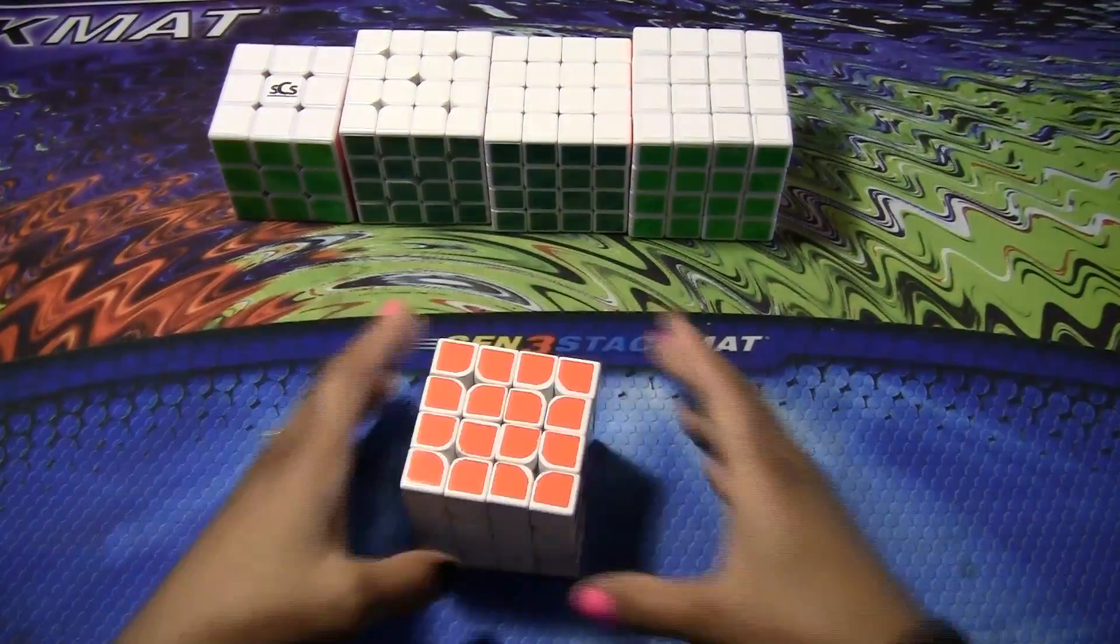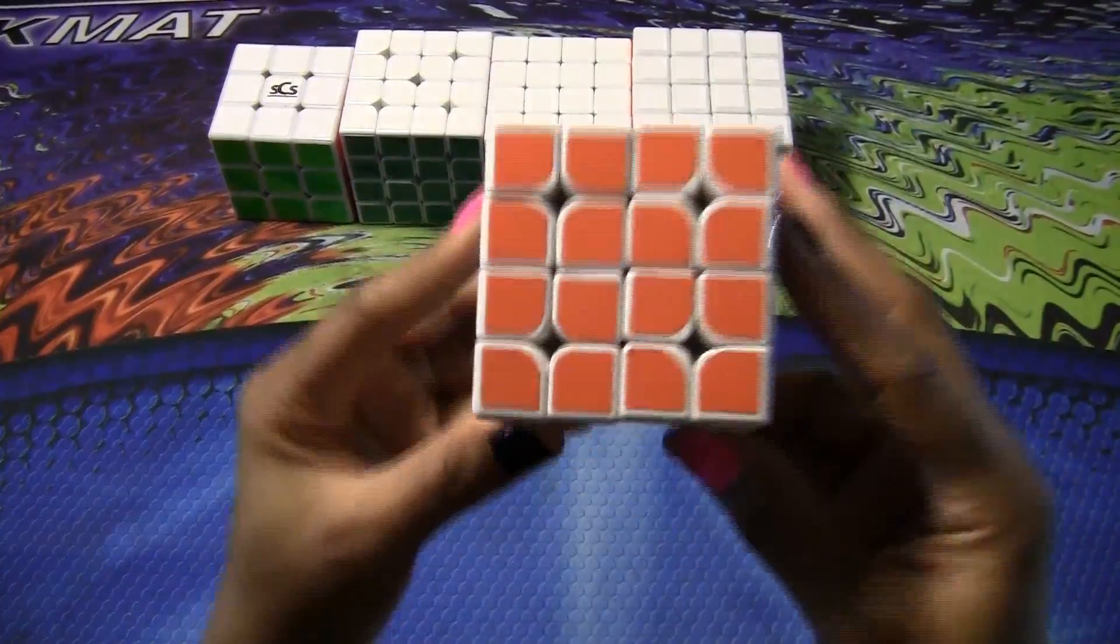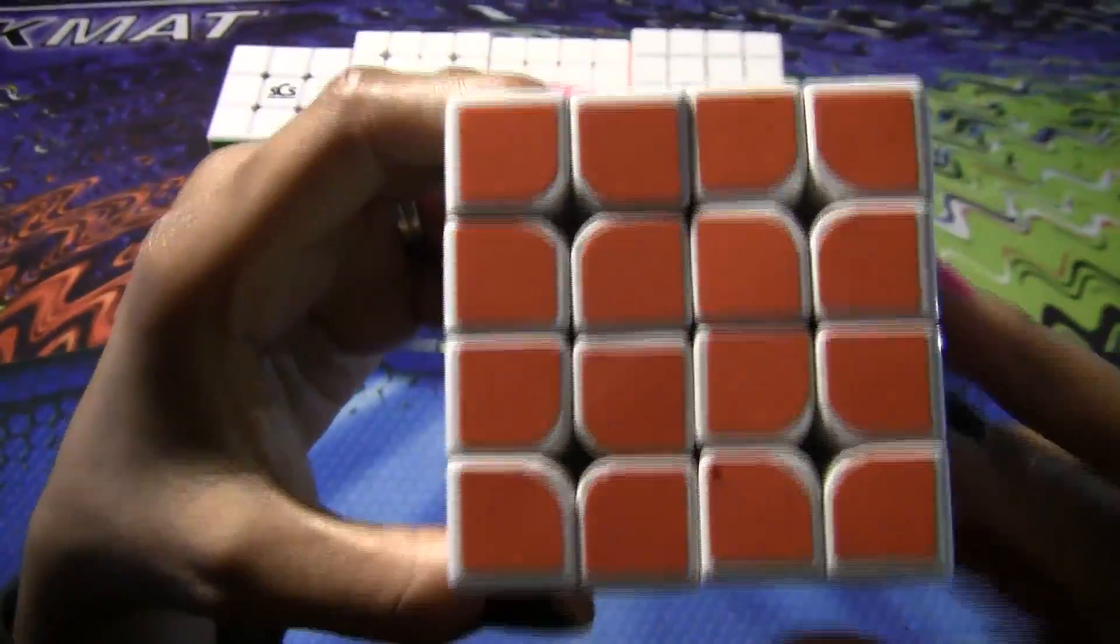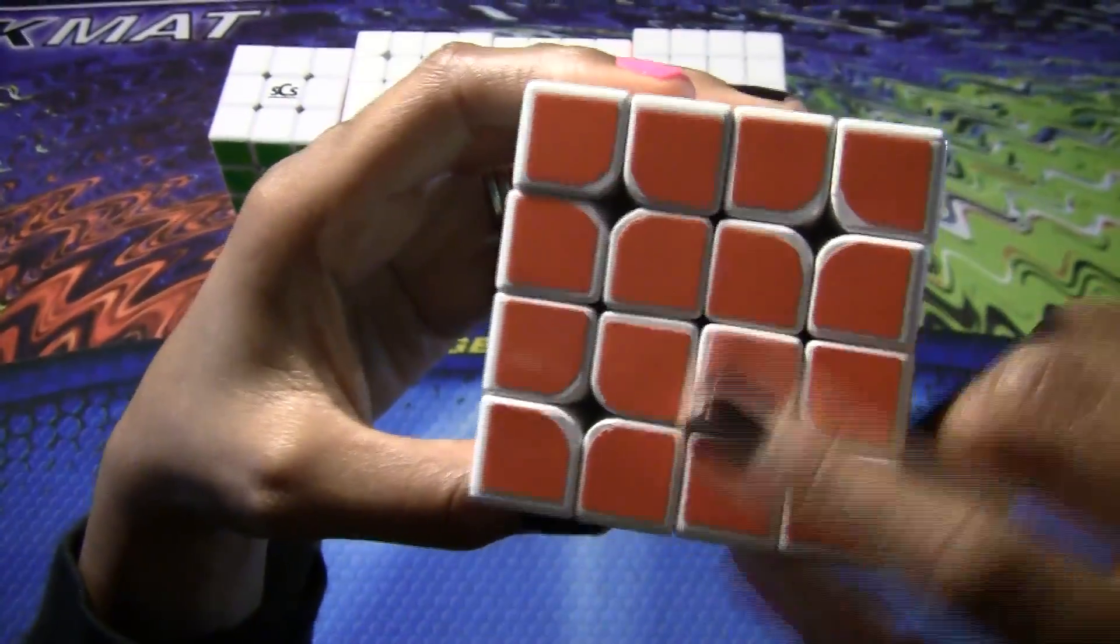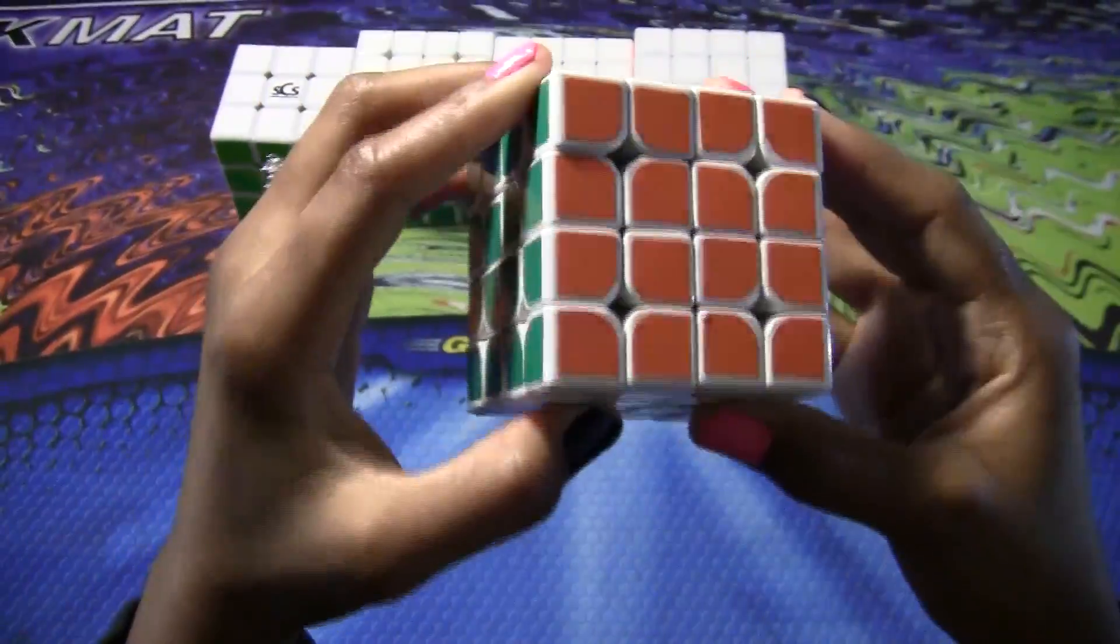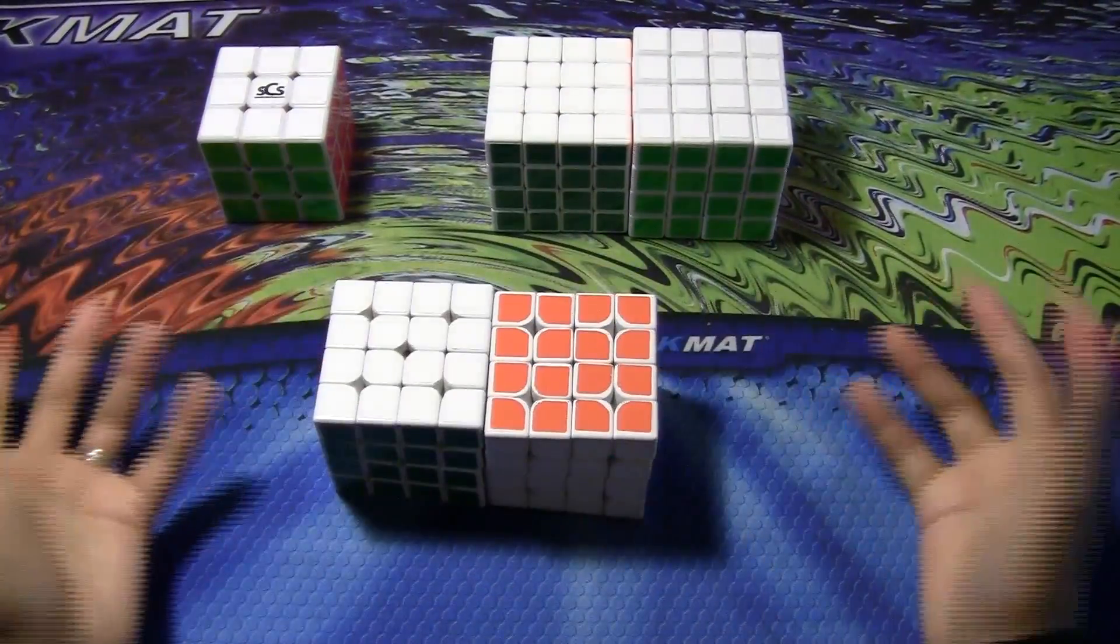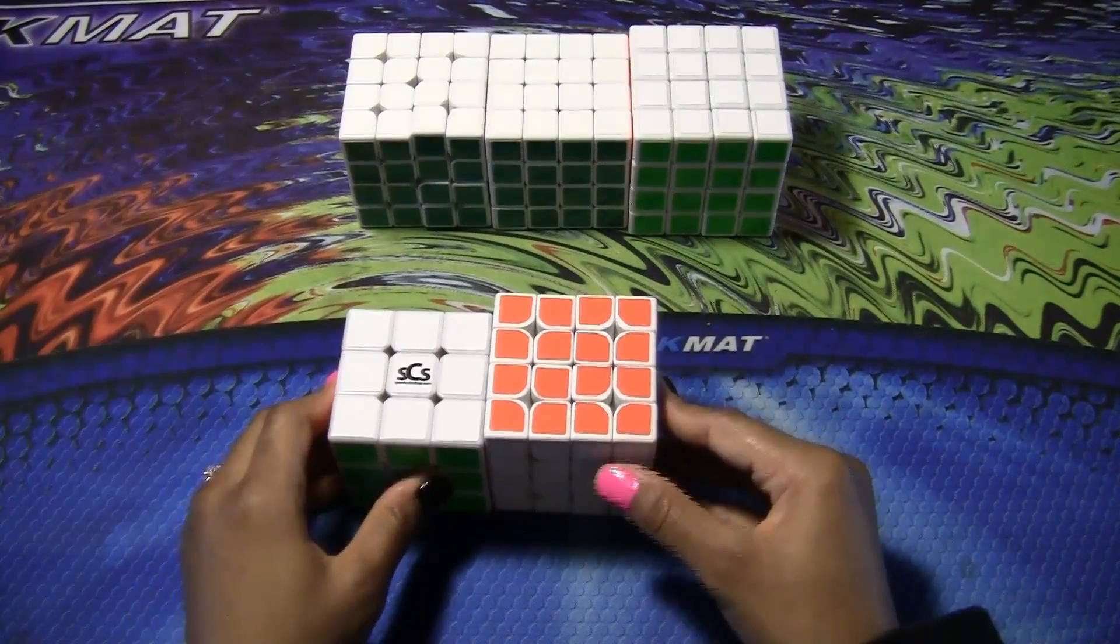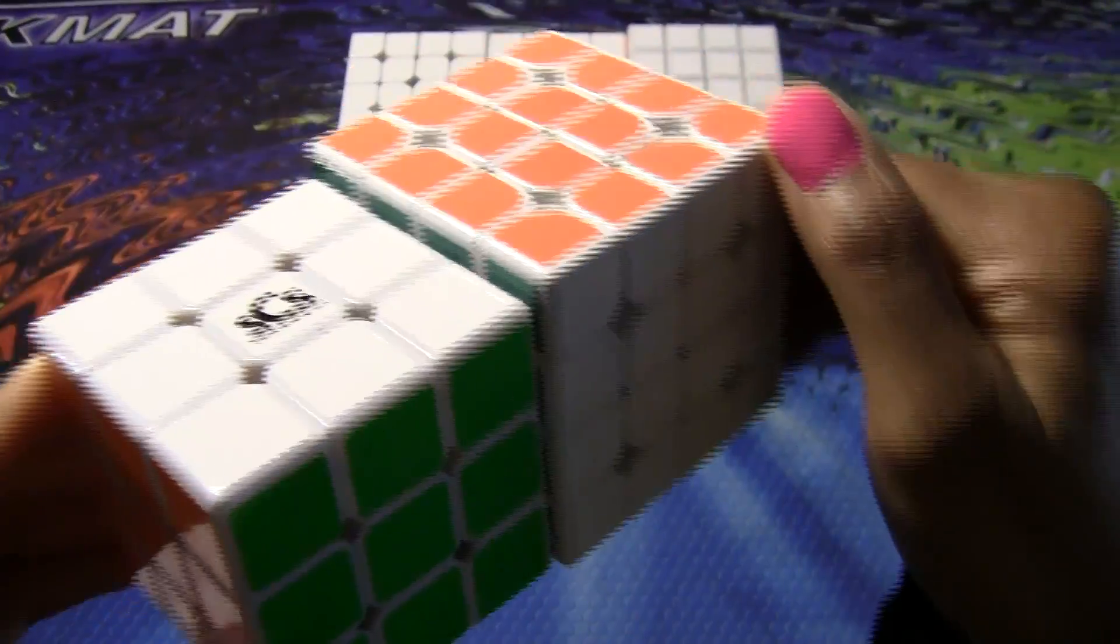The stickers that come with this puzzle are the regular ShengShou 4x4 stickers, but as you can see, TheCubicle cut the stickers so they can fit the pieces just better and it looks nicer being cut. Also, the size of this puzzle is actually the same size as just a regular ShengShou. Compared to a 3x3, it's like that.